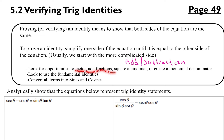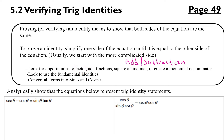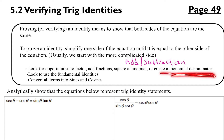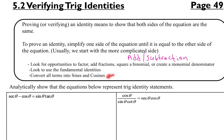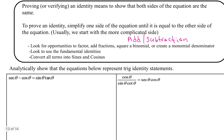I've listed a few options you might try: look for opportunities to factor, add fractions together, square binomials, or create binomial denominators — in other words, find ways to factor things or bring fractions together. Maybe those don't work and you move into looking at your fundamental identities — think about your Pythagorean identities especially. Anytime you see something squared, that's a good thing to think about. And if all else fails, convert everything into sine and cosine, but that is your last ditch effort.